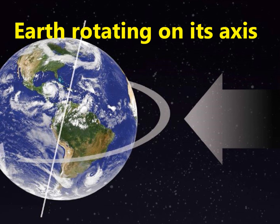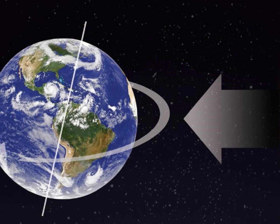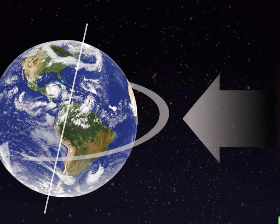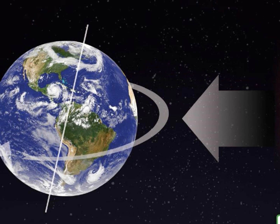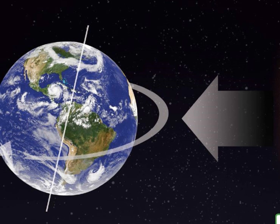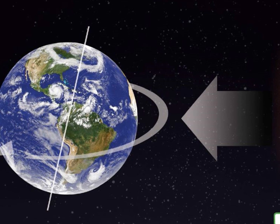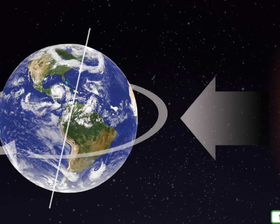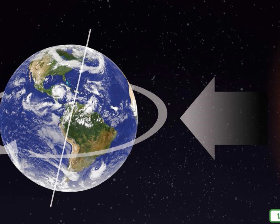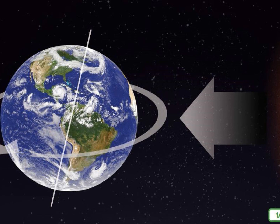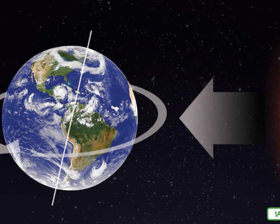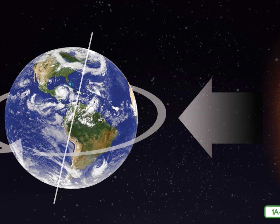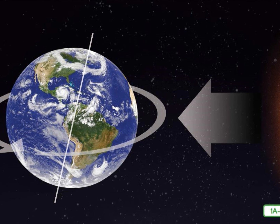Rotation is the movement of Earth on its axis. This controls the cycle of daytime and nighttime. Earth takes 24 hours to turn, or rotate, back to the position from which it started. Rotation takes us from daytime to nighttime and back to the very beginning of daytime again, before the cycle starts over. As Earth rotates, light from the Sun falls on one half of the Earth. We call this daytime. The other half of the Earth is in darkness, and we call this nighttime.